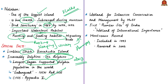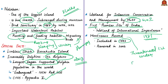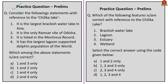Chilika Lake is included in the list of wetlands selected for intensive conservation and management by the Ministry of Environment and Forests of India. Chilika Lake was designated as the first Ramsar site of India, meaning it is a wetland of international importance. The lake has been a Ramsar site since 1981. The lake was included in the Montreux Record in 1993 — a threatened list under the Ramsar convention — due to changes in the ecological character of the lake ecosystem. Subsequently, due to successful restoration by the Chilika Development Authority, it was removed from the Montreux Record in 2002.